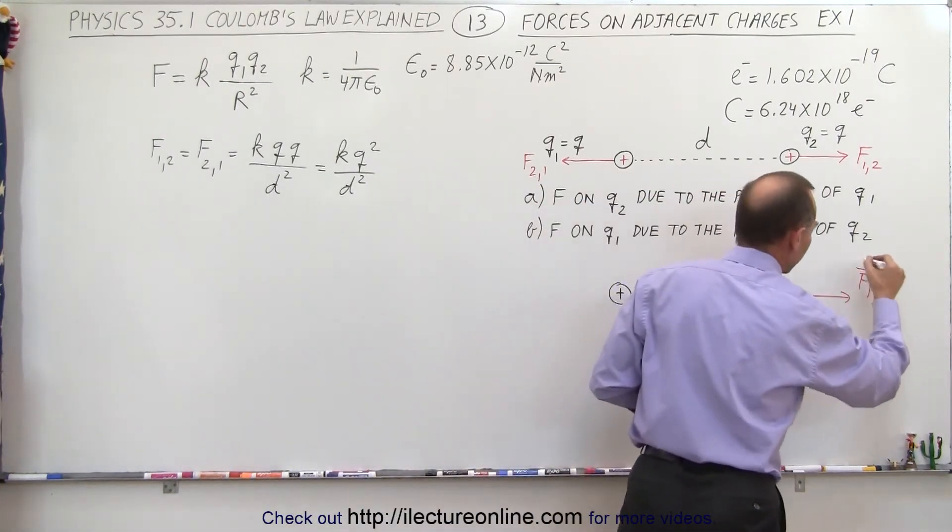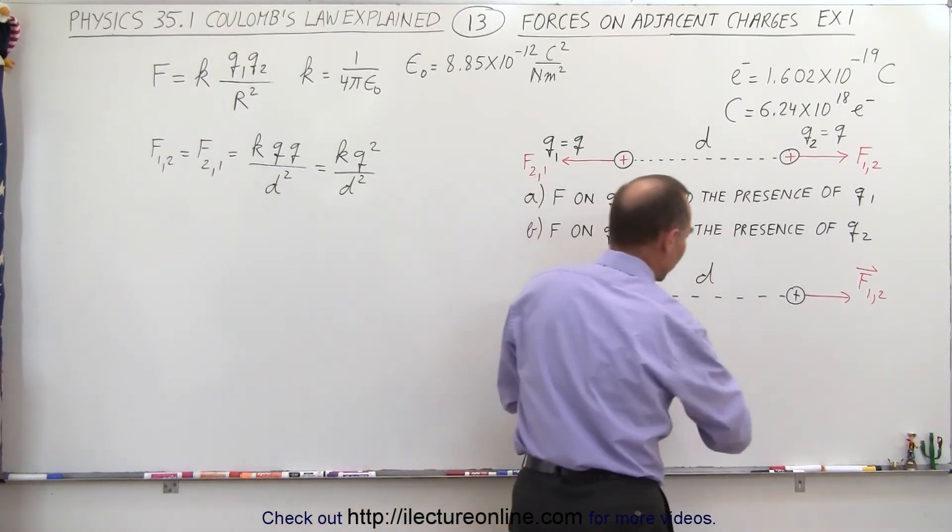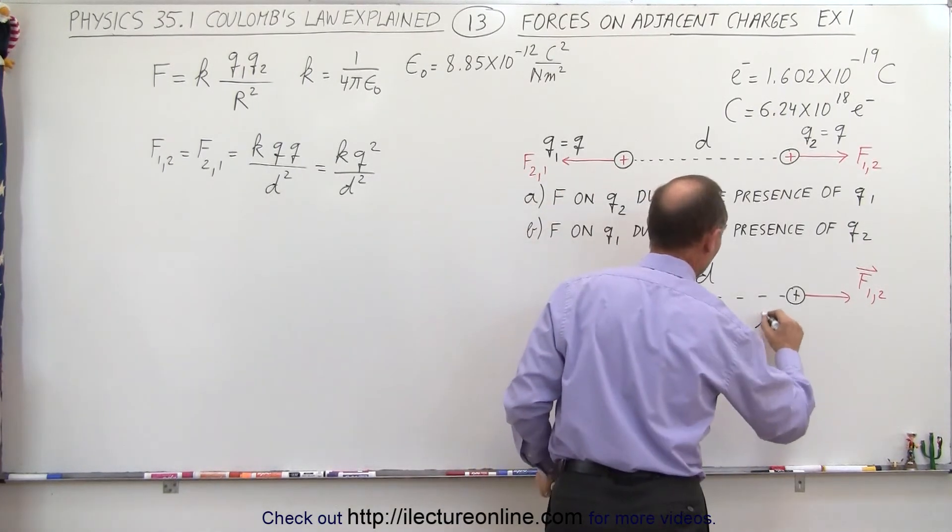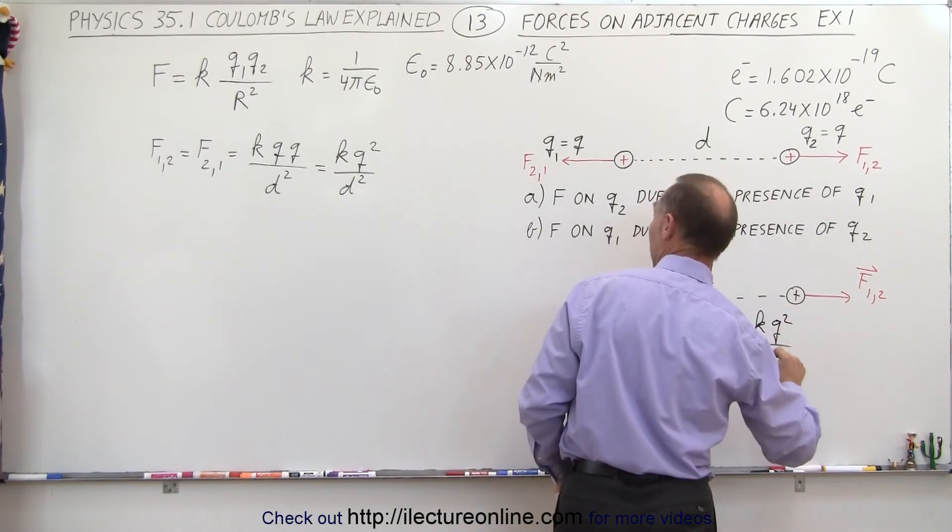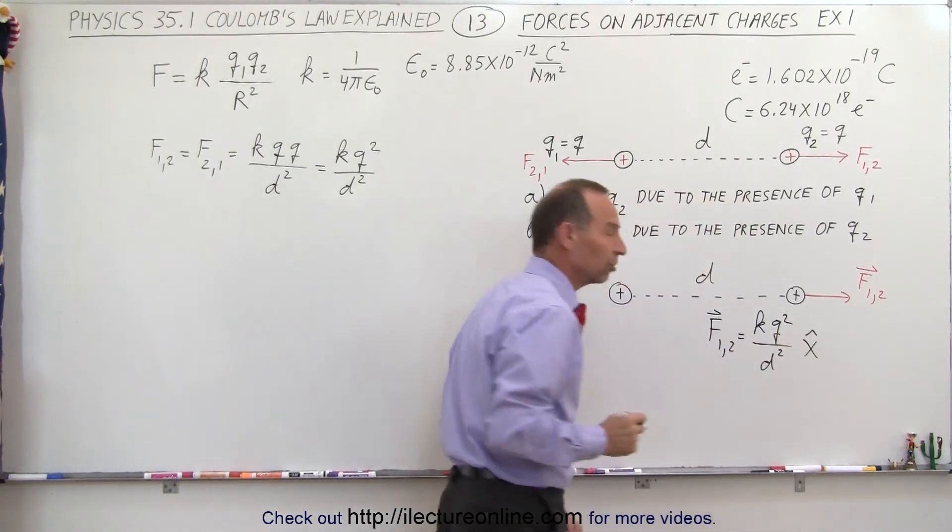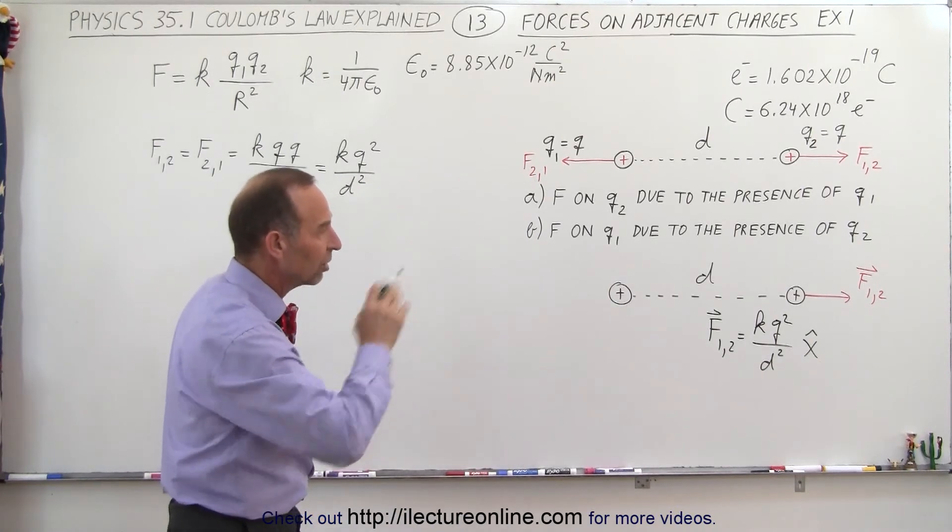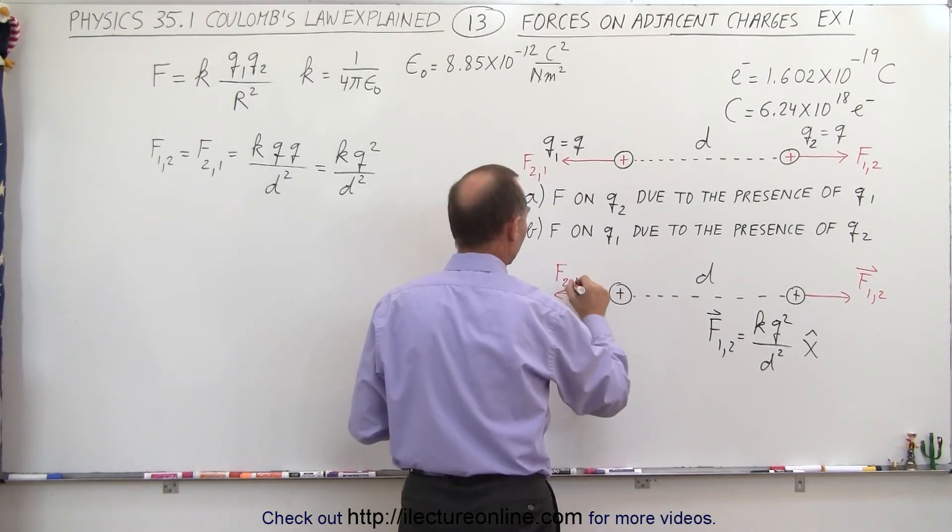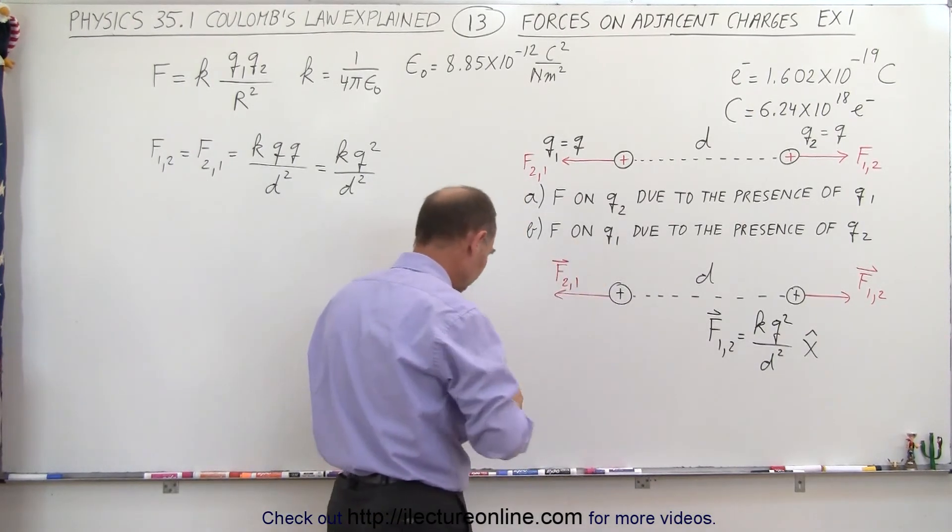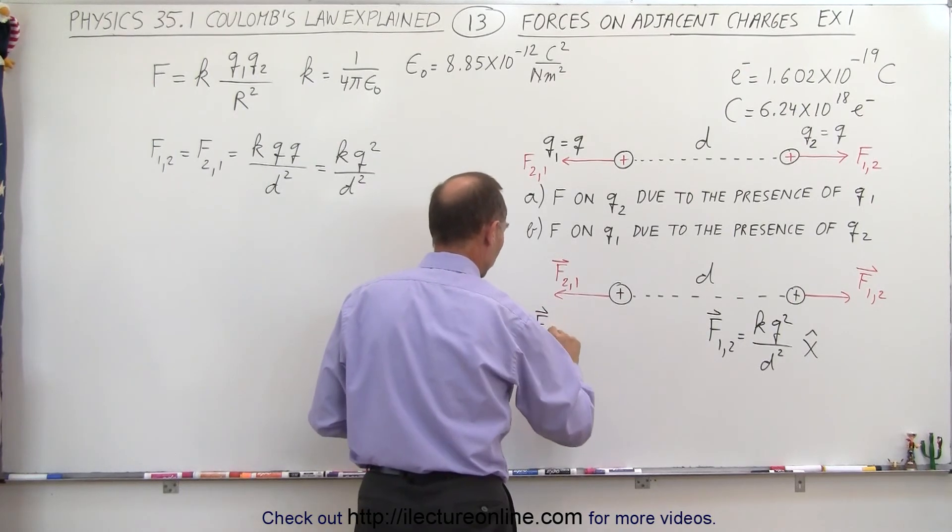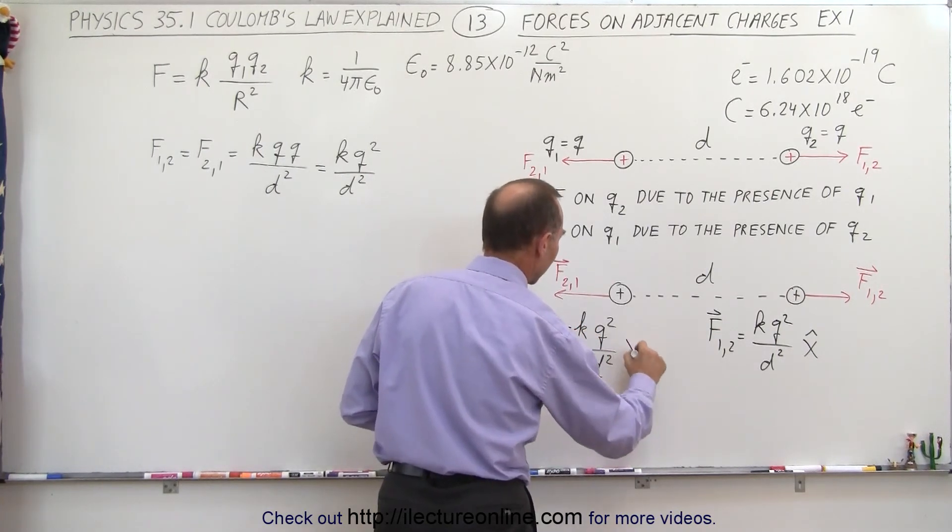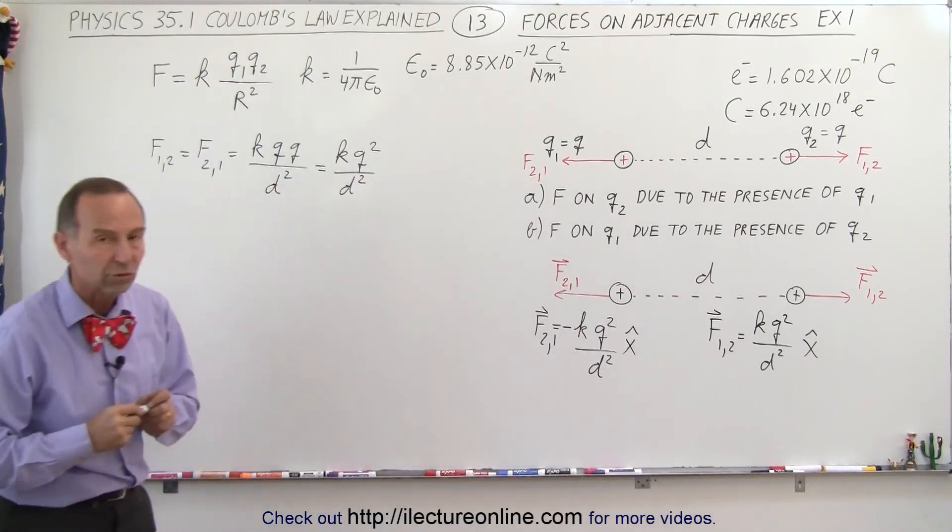So this is now a vector quantity, and to write the result in vector form, we can say that f1,2 equals the magnitude of that force, which is kq² divided by d² in the positive x direction, so we write x with a hat on that. And then if we want to write this force f2,1, that's the magnitude of the force. We can say that f2,1 equals kq² over d², but since it's pointing in the negative direction, we want to put a negative sign in front of that and put the direction as a vector.